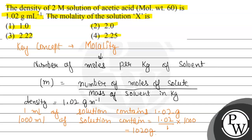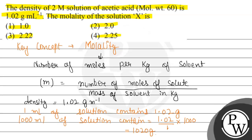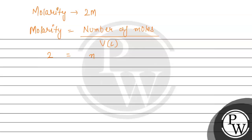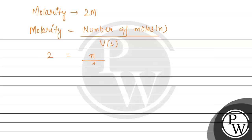The molarity of the acetic acid solution is also given — that is a 2 molar solution. To find molality we need the number of moles of solute. Molarity is number of moles per volume in liters. The molarity given is 2, and since we took 1000 mL which means 1 liter, the number of moles of solute is 2.